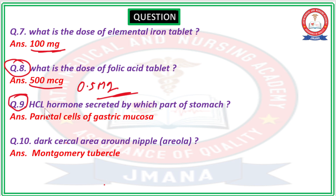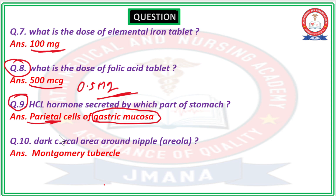Question number 9: HCL hormone — from which part of the stomach is HCL secreted? In the gastric mucosa of the stomach, the parietal cells are responsible for HCL secretion. HCL secretion occurs in the presence of gastrin hormone.